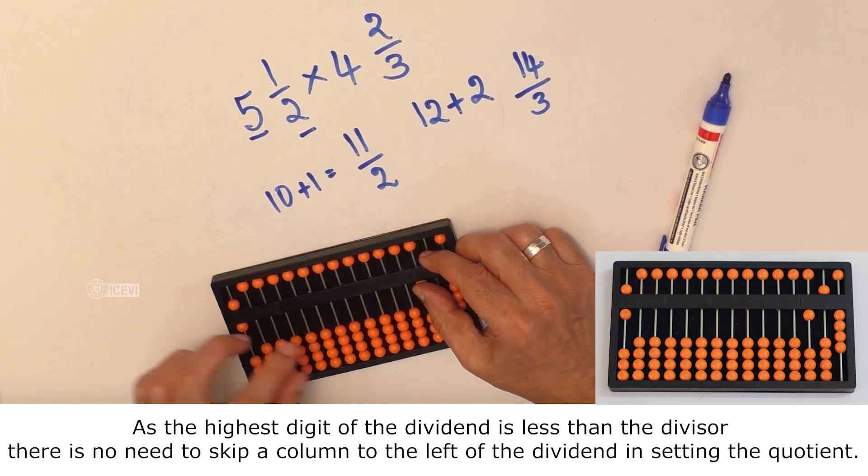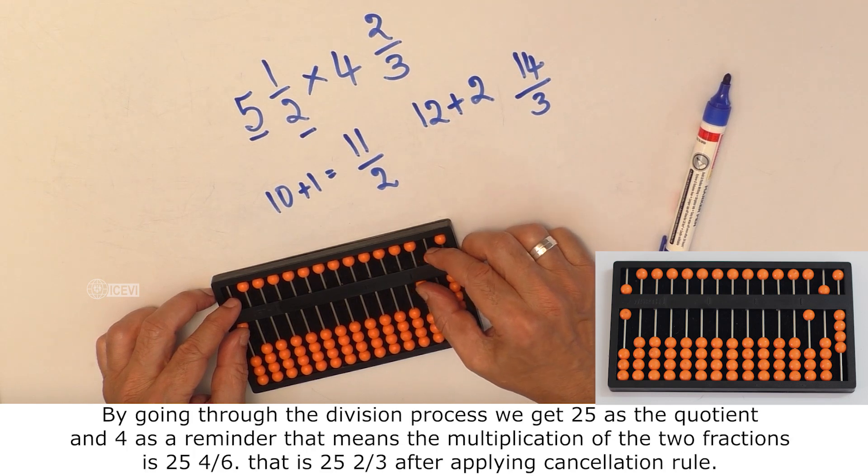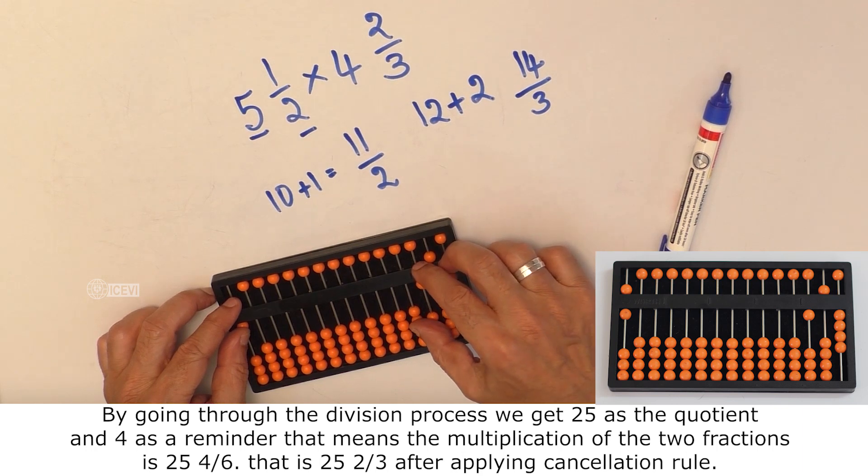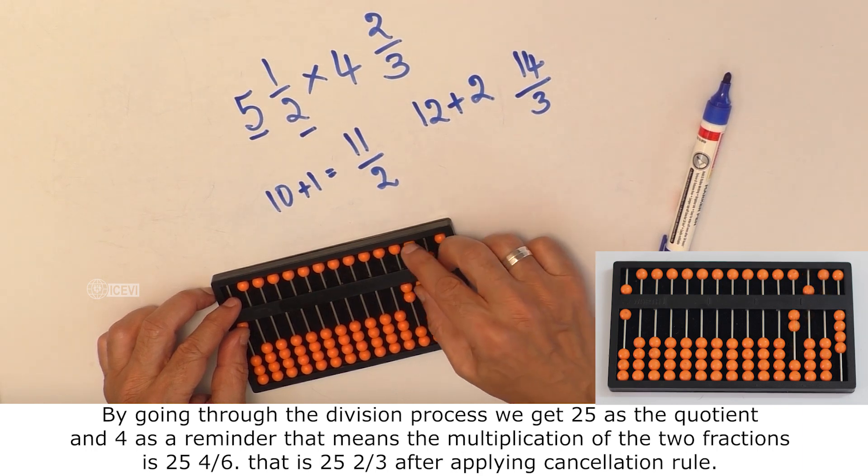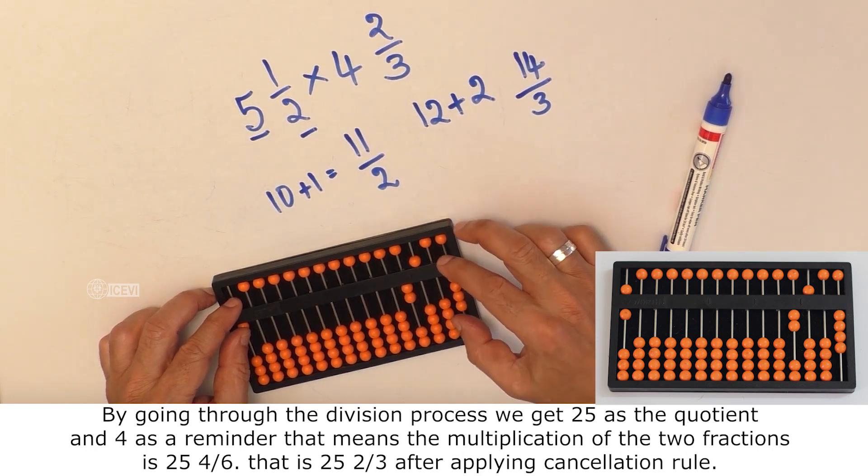Now the normal division rules apply. As the highest digit of the dividend is less than the divisor, there is no need to skip the column to the left of the dividend in setting the quotient. By going through the division process we get 25 as the quotient and 4 as the remainder.